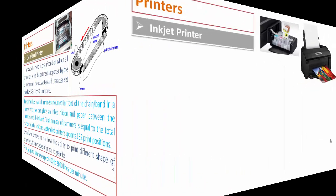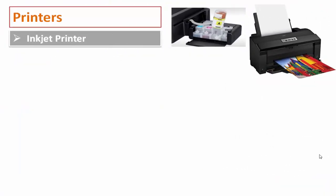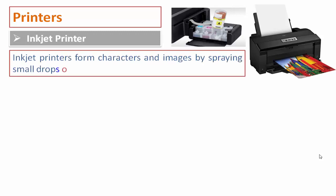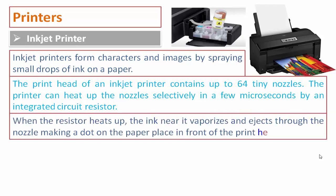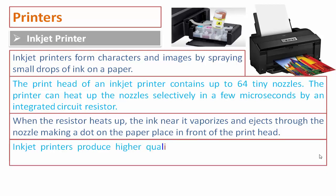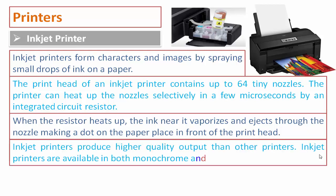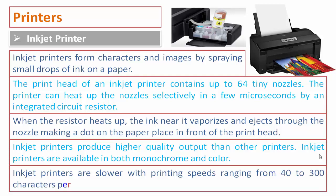In the non-impact category, inkjet printers form characters and images by spraying small drops of ink on paper. The print head of an inkjet printer contains up to 64 tiny nozzles. The printer can selectively heat nozzles in a few microseconds using an integrated circuit resistor. When the resistor heats up, the ink near it vaporizes and ejects through the nozzle, making a dot on the paper. Inkjet printers produce higher quality output than many other printers and are available in both monochrome and color, with printing speeds ranging from 40 to 300 characters per second.